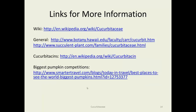For more information, of course there's Wikipedia. The Hawaii people have a pretty good description of the family. Succulentplant.com has quite a bit about the cucurbits, and the cucurbitacins are also on wiki. If you're interested in big pumpkin competitions, smarttravel.com has an actual list of competitions — you can do a big circuit in the fall. As a hint, don't go to places where they have a drought. Last year our state fair's largest pumpkin was considerably smaller than the winners in 2007, 2008, and 2009 when it was so wet. So that concludes the Cucurbitaceae.